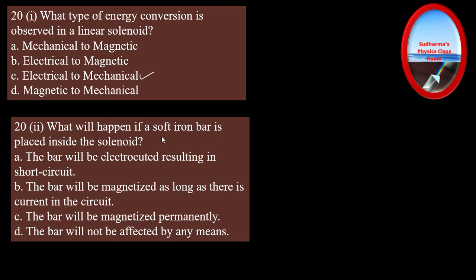Question two: what will happen if a soft iron bar is placed inside the solenoid? The bar will be magnetized as long as there is current in the circuit — option B. It will not be magnetized permanently because soft iron loses its magnetic property once the current is removed. The magnetic field strength increases because the soft iron bar is magnetized while the current flows. So answer is B.